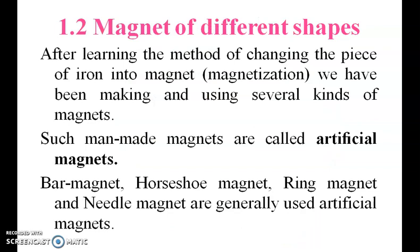This is a natural magnet. Magnets can be found in different shapes. After learning the method of changing a piece of iron into a magnet, artificial magnets are made. This is an artificial magnet.